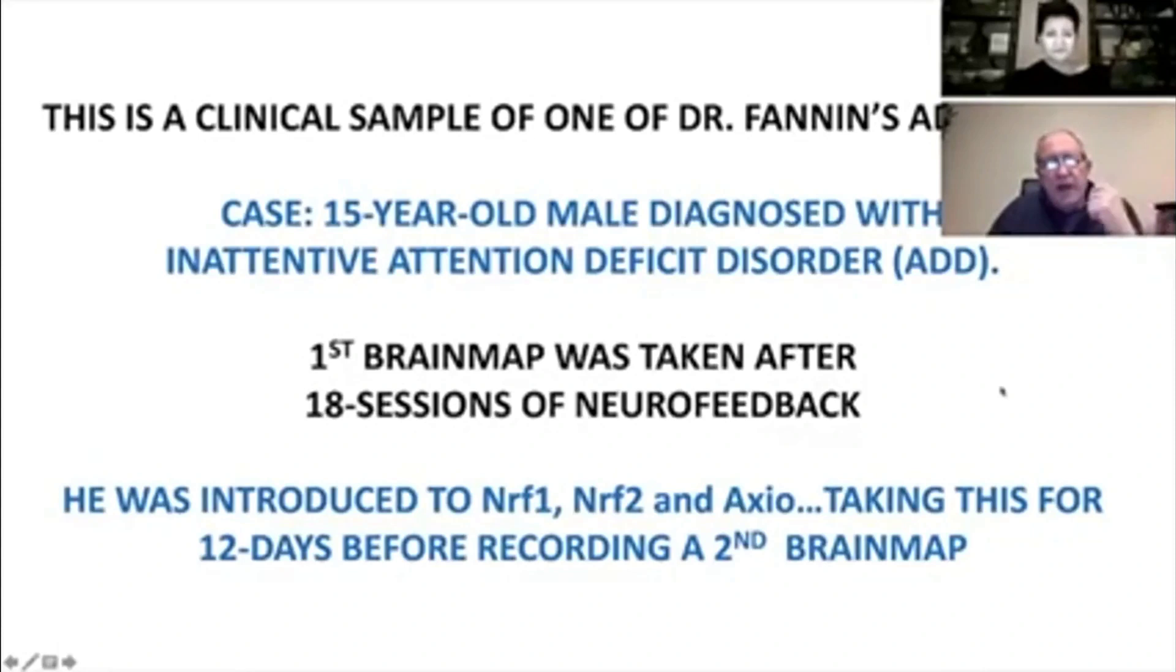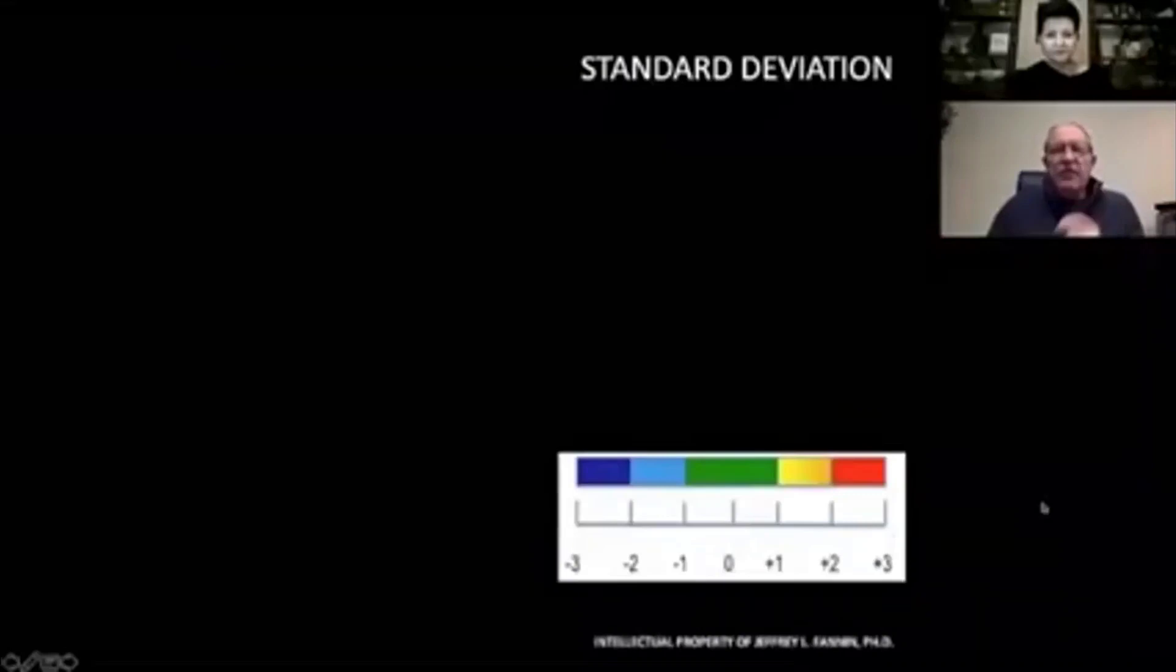The first brain map was taken after about 18 sessions of doing neurofeedback with me, and then we introduced them to NRF1, NRF2, and Axio. He took this regimen for about 12 days before we did a second brain map.